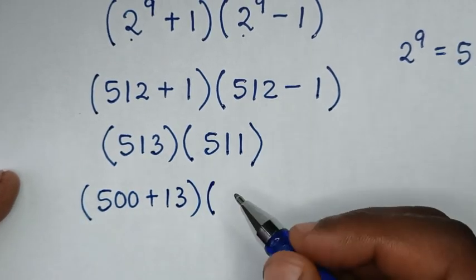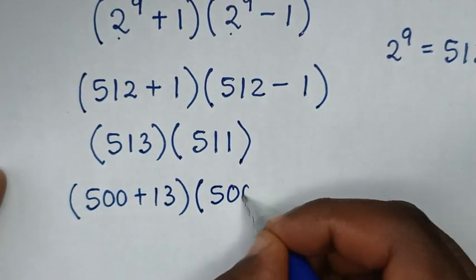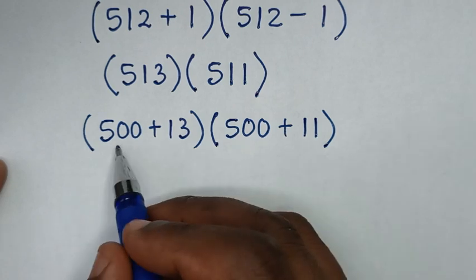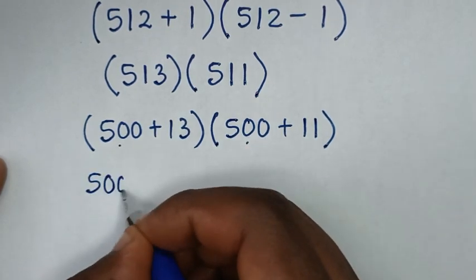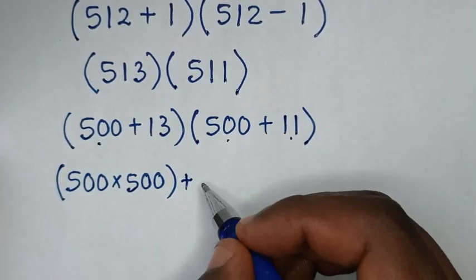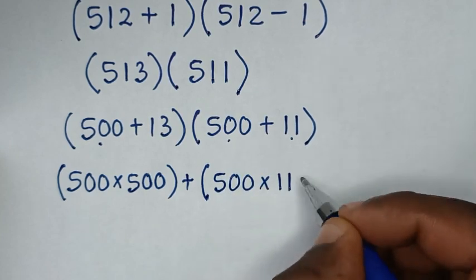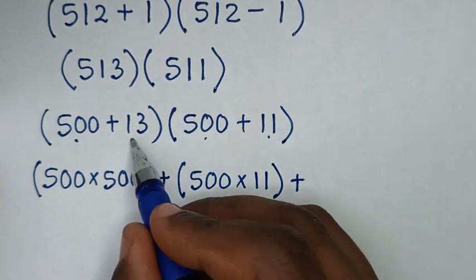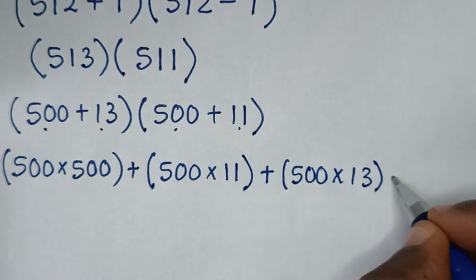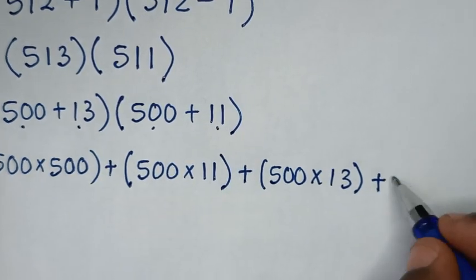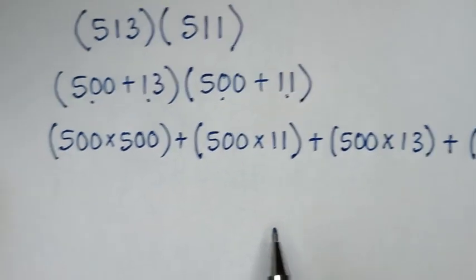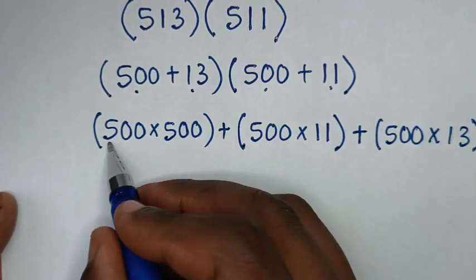In the next step we'll multiply this out. So here: 500 times 500, bracket, then plus 500 times 11, bracket, then plus 13 times 500, bracket, then plus 13 times 11, bracket.